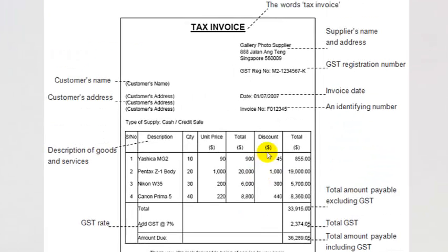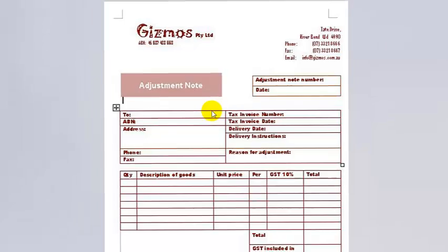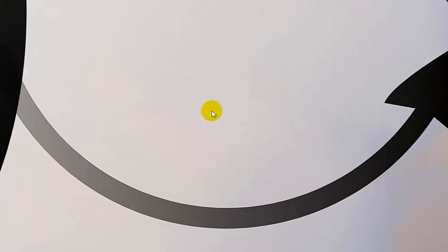When we have a credit transaction — i.e. cash hasn't yet passed — we have a tax invoice. You can see here we have all these items, a number of cameras, and of course the GST is added. Sometimes if there's a return for something, we have a thing called an adjustment note, which is also based on a credit transaction, not a cash transaction. That summarises what happens at the first stage: a transaction occurs and a source document is generated.